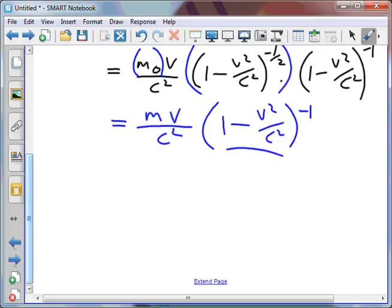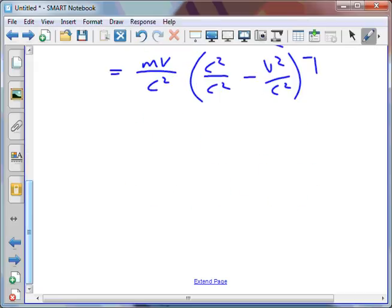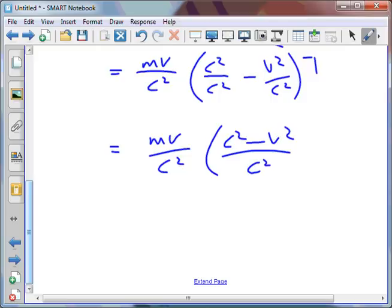I could express this in a different way. The number 1 can be thought of as c squared on c squared minus v squared on c squared. And that will give me mv on c squared times c squared minus v squared on c squared to the power of negative 1.